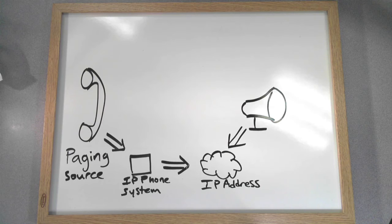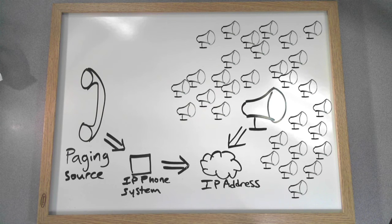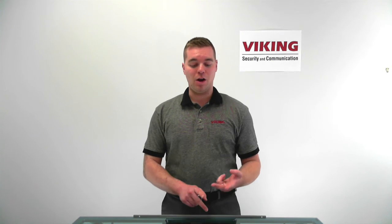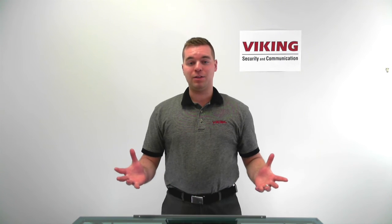In a multicast page, my paging source makes a call to an IP address, and then all my IP speakers — all 30 of them — are tuned into that IP address to receive the broadcast audio. This reduces your SIP licensing fees and hardware requirements. And 30 isn't even the limit — there really isn't a limit to how many IP endpoints and paging zones can be tuned into an IP address.